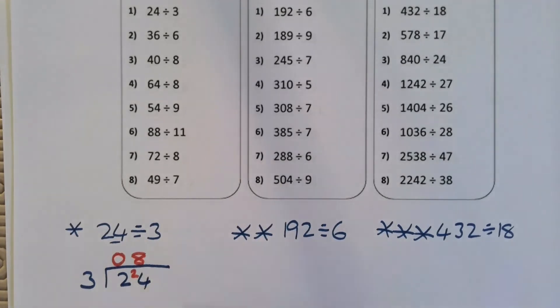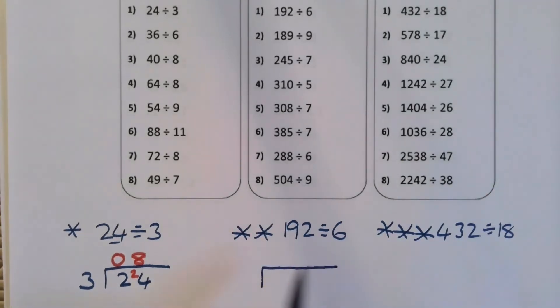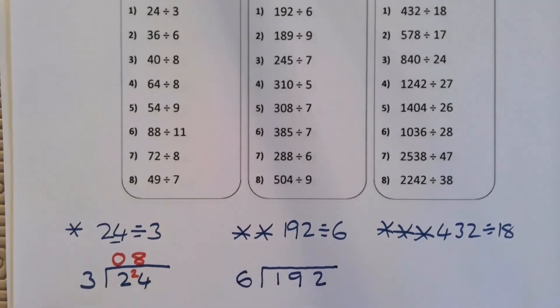Second one then, so 192 divided by 6, so we draw our bus stop, space the numbers out nicely so there's lots of room for workings. Again, first number to the bus stop gets a seat in the bus stop, second number has to sit outside.